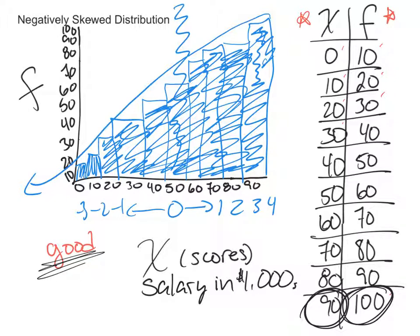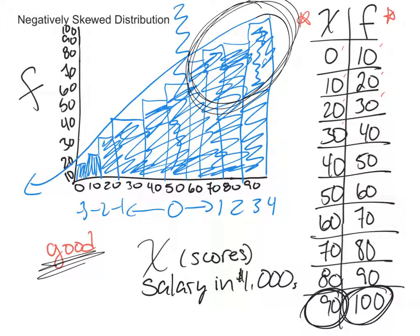Don't think negative is always bad — negative can be good too. It's the same thing with grades. If these were grades on an exam, the students would think this is a really good thing, because the bulk of the higher scores are piling up on this part of the graph, and only very few people scored in the low failing range. This is a good example of how a negatively skewed distribution is actually a really good thing.